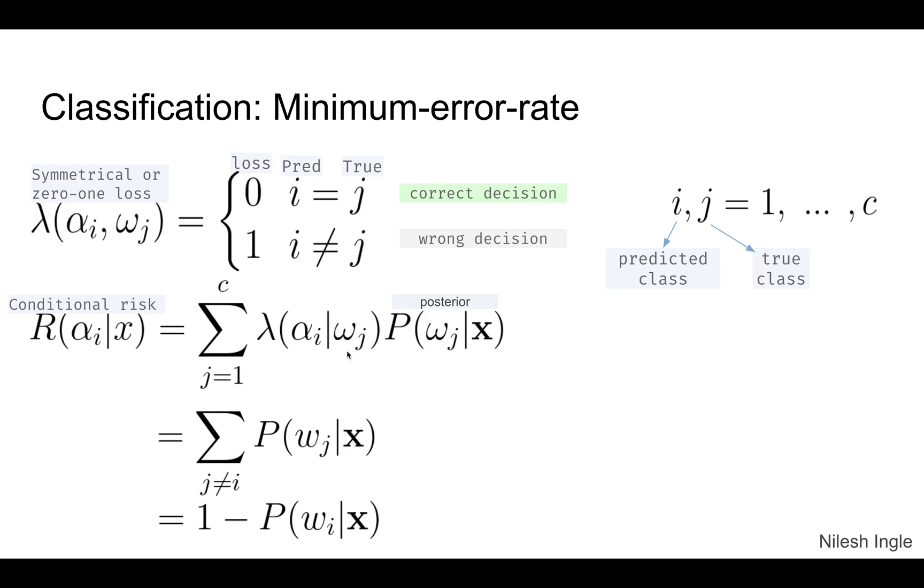You multiply it by the posterior probability, and we can calculate the conditional risk as shown here for all classes from j equals one to c. We can also calculate the conditional risk by this relation where the sum values for posterior probability when j is not equal to i. The converse of that, if we subtract those values from one, then we get the posterior probabilities for omega i.